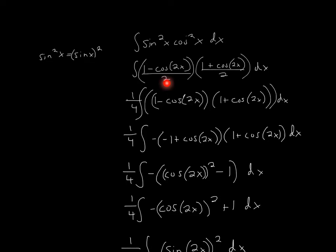Now, what we can do is pull out the 1 half from this equation and 1 half from this, and so if we pull out two 1 halves, it'll be 1 half times 1 half, making 1 fourth.